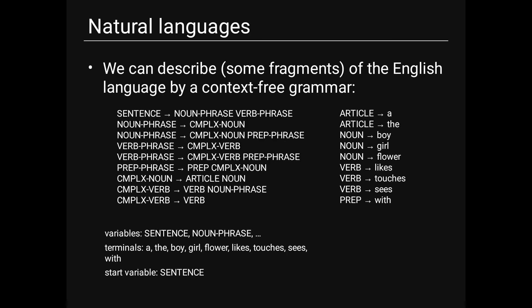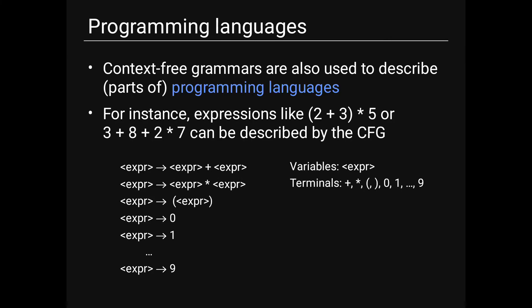We can describe English using a CFG: sentence → noun-phrase verb-phrase; noun-phrase → complex-noun or prepositional-phrase; verb-phrase → complex-verb verb-phrase. Articles: a, the. Nouns: boy, girl, flower. Verbs: likes, touches, sees. Preposition: with. Variables are sentence, noun-phrase, etc. Terminals are a, the, boy, girl, flower, likes, touches, sees, with. The start variable is sentence.